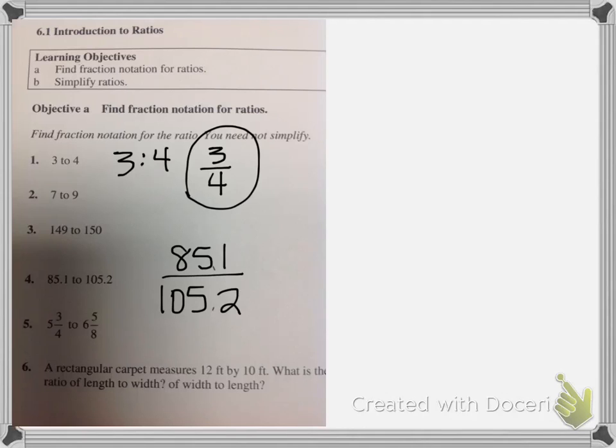The last one, a rectangular carpet measures 12 feet by 10 feet. What is the ratio of length to width, of width to length? So which one would you consider for the length to width?